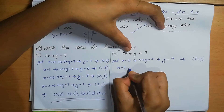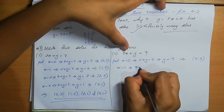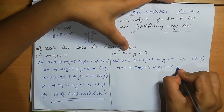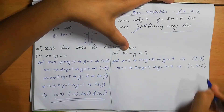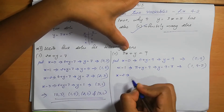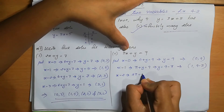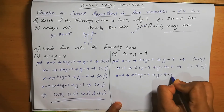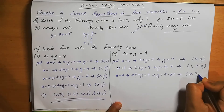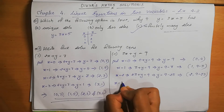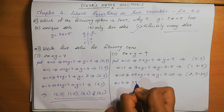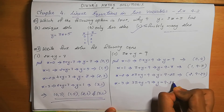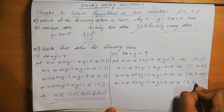Put x=1: π×1 + y = 9, so y = 9 − π. The solution is (1, 9 − π). Put x=2: 2π + y = 9, so the solution is (2, 9 − 2π). Put x=3: 3π + y = 9, so y = 9 − 3π. The solution is (3, 9 − 3π).